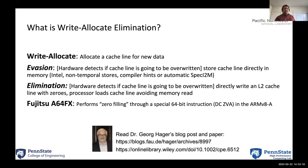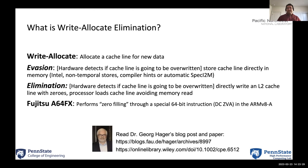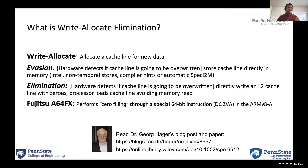Let's talk about write allocate elimination. Before a write is possible, you must assign a cache line — it might be write-through — and bring the data into the caches. That is write allocate. You then have two options: evasion and elimination.